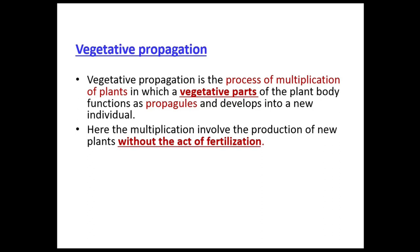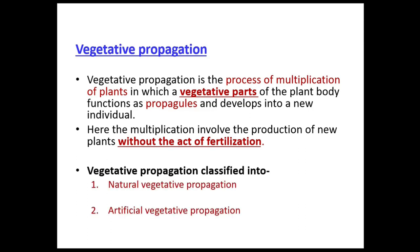The important thing to remember here is that vegetative propagation happens without active fertilization — there is no involvement of sex organs, no pollen, no pistil. There are two types of vegetative propagation: natural vegetative propagation and artificial vegetative propagation.